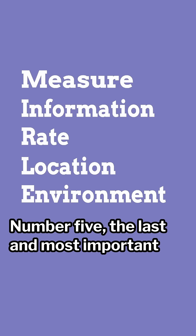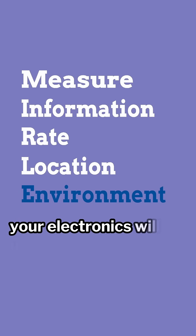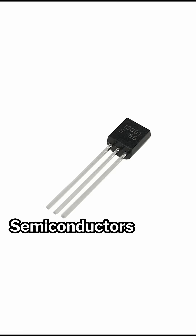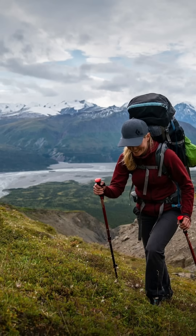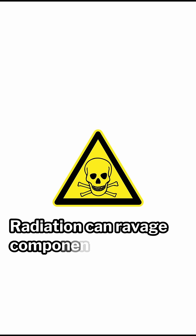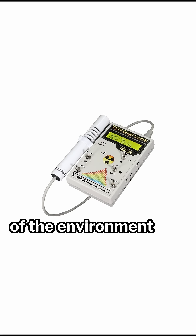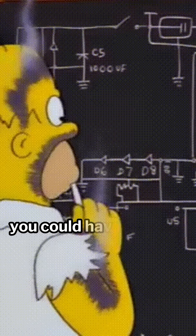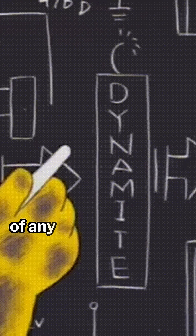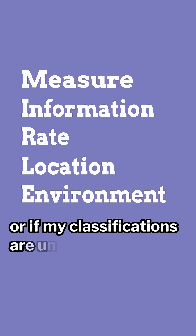Number five — the last and most important piece of information you need to think about is the environment your electronics will be undergoing. Semiconductors can drastically change characteristics based on temperature. Humidity can affect sensor readouts. Radiation can ravage components on satellites. You really need to know the characteristics of the environment that your project is in, or else you're going to be going through issues you could have never expected. Please let me know if you can think of any other forms of classifications, or if my classifications are unnecessary.